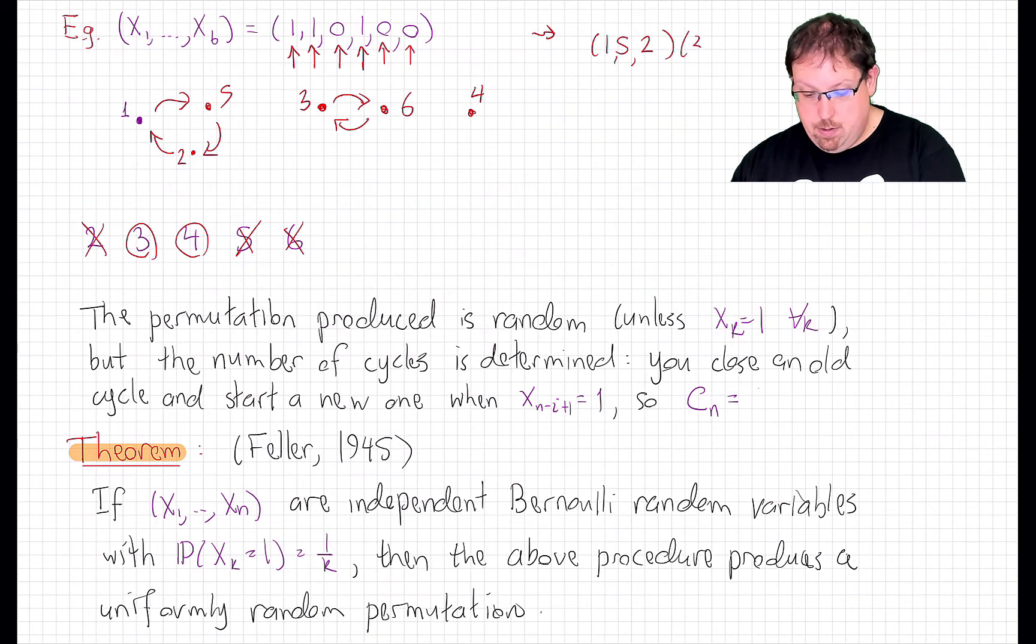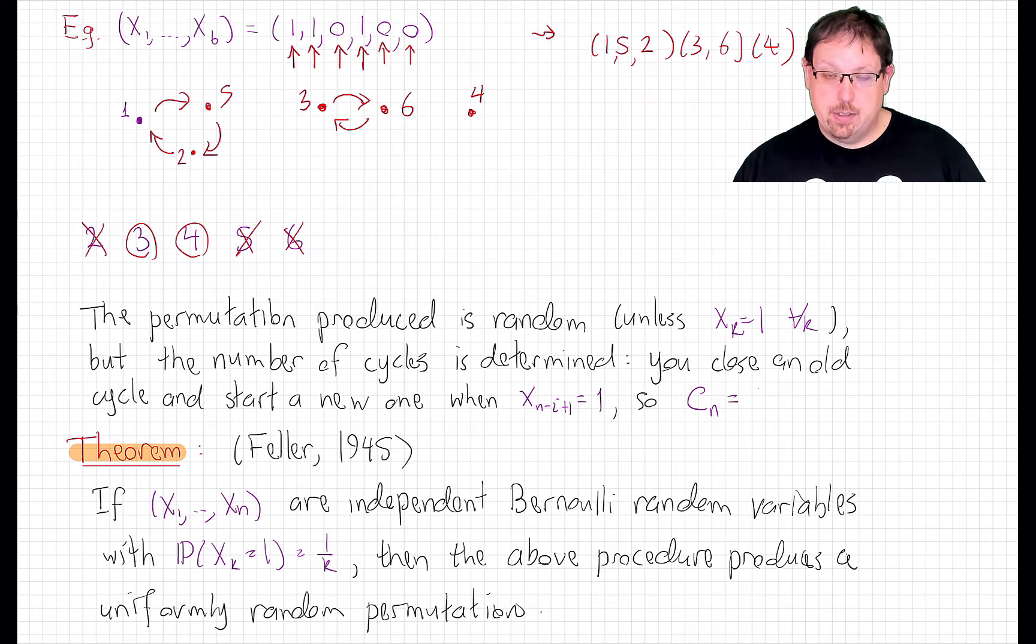And we have generated the following random permutation. 1, 5, 2, 3, 6, and 4. It is a permutation with three cycles. Now, if we'd started this procedure again, we would have generated a likely different permutation. And you can quickly work out how many permutations there are corresponding to this particular pattern of 1s and 0s. That's an undergraduate combinatorial probability type problem.